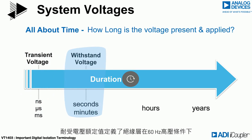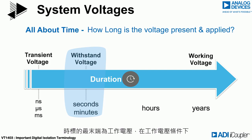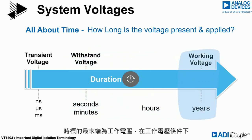The withstand voltage rating defines the ability of the insulation to survive at least one minute with a 60 Hz high voltage sinusoid. At the extreme end of the timescale is the working voltage, in which the insulation must survive continuously for decades.